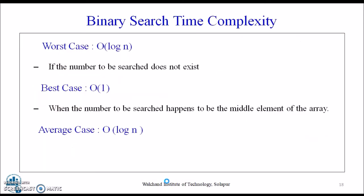Binary search complexity is further classified into 3 cases: worst case, best case, and average case. The worst case occurs when the element to be searched is not present in the array, requiring traversal of the complete steps. Hence, the time complexity at worst case is O(log n) with a space complexity of O(1), as we need not declare another array — we simply return the index of the key element. The best case complexity is O(1), that is, when the number to be searched happens to be the middle element of the array. Best case and average case complexity are the same.